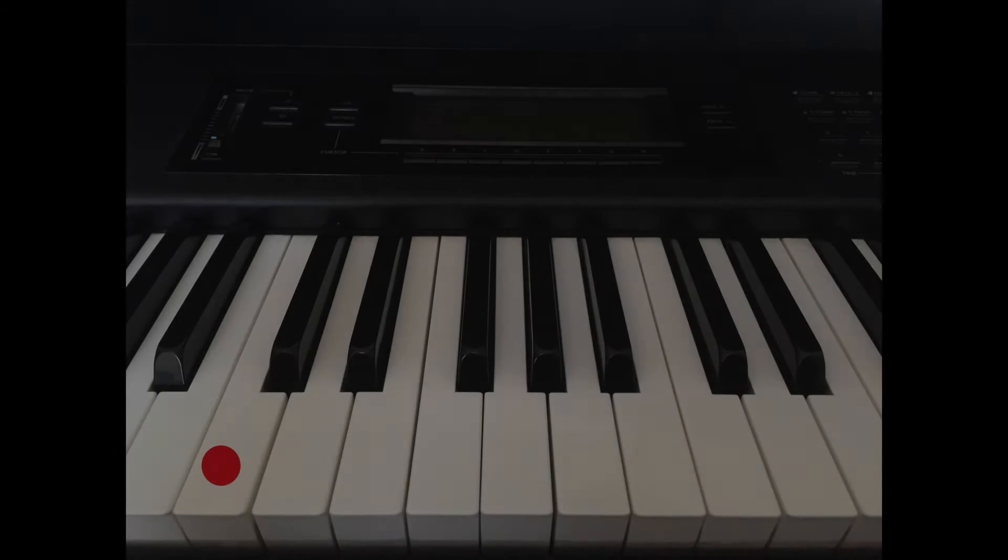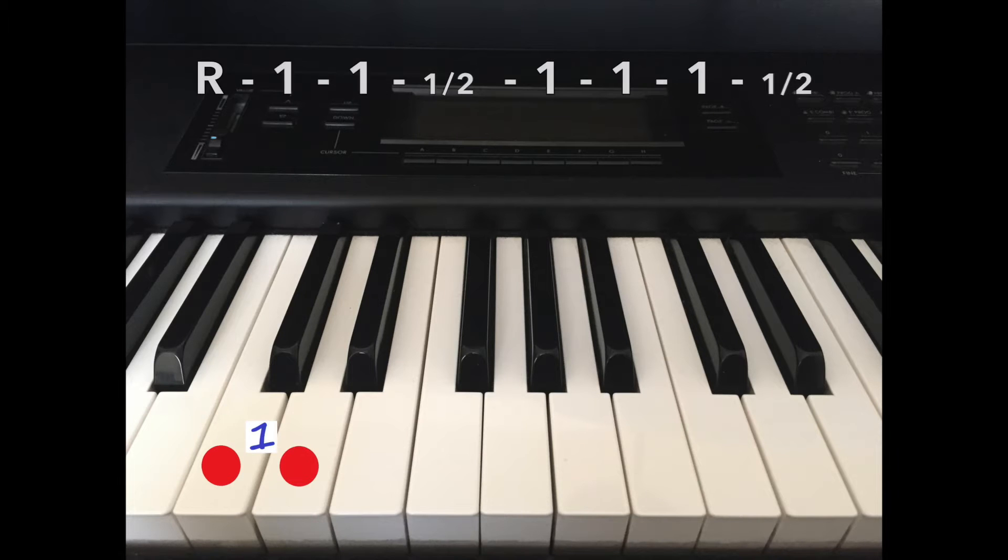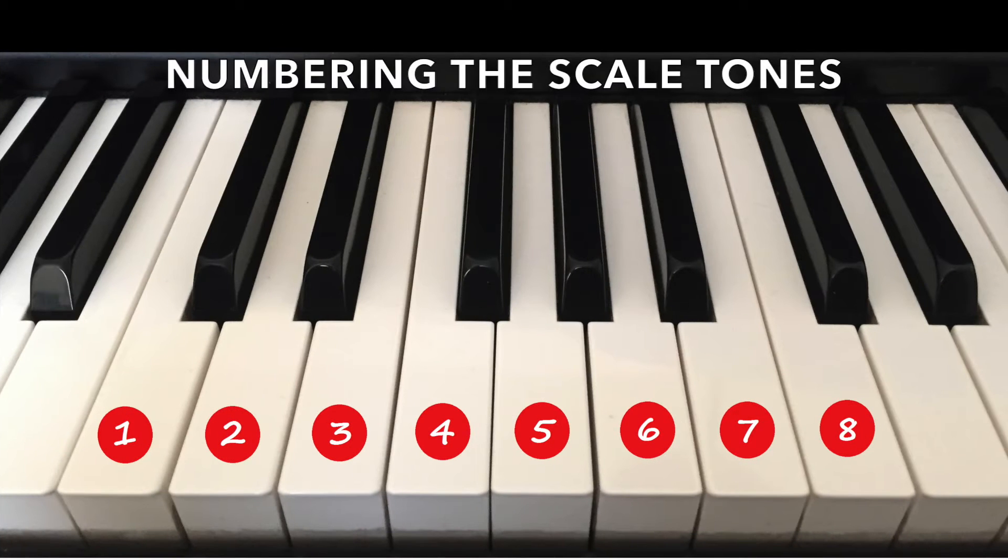Let's start by making a C major scale. We'll start with the root note. Then we'll go a whole tone up, another whole tone up, half a tone up, whole tone up, whole tone up, whole tone up, and finally half a tone up. Once we have a row of scale tones, we number them in numerical order from one to eight. Each scale tone is identified via its numerical position.